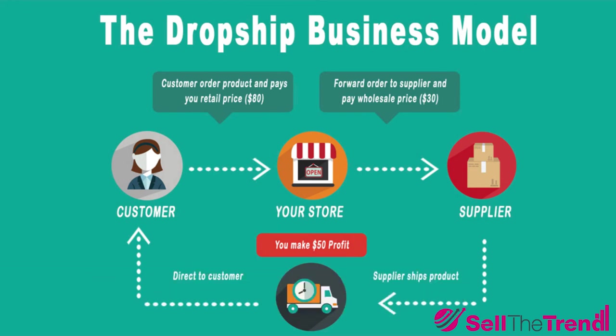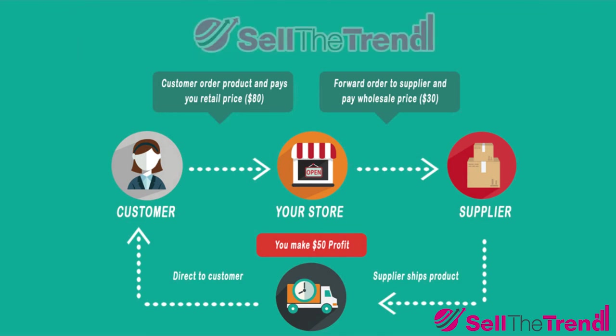So now, here is where Sell the Trend is going to supercharge this model and make it work for you, giving you the easiest and most consistent way to make money from all of this. First off, we're going to show you thousands of winning products in multiple niches. Whatever niche you're in, whether it's fishing, camping, pets, or whatever, we're going to show you lots and lots of winning products. And since we're updating the site daily, you're always going to be exposed to fresh products. So now you're going to be able to fill your store with winning products along with the correct pricing and other details that we're going to show you for these products.